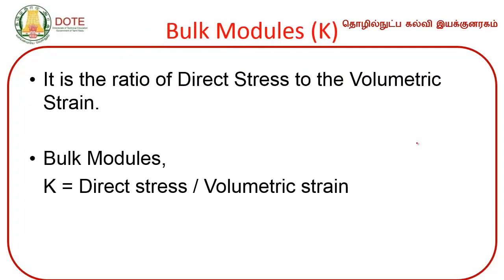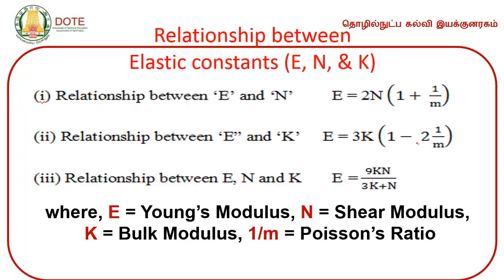Bulk modulus is the ratio of direct stress to volumetric strain, denoted by K, where K = direct stress / volumetric strain. The relationships between the three elastic constants are: E = 2N(1 + 1/m), and E = 9KN/(3K + N), where E is Young's modulus, N is shear modulus, K is bulk modulus, and 1/m is Poisson's ratio. Using these formulas we can determine the values for all elastic constants.